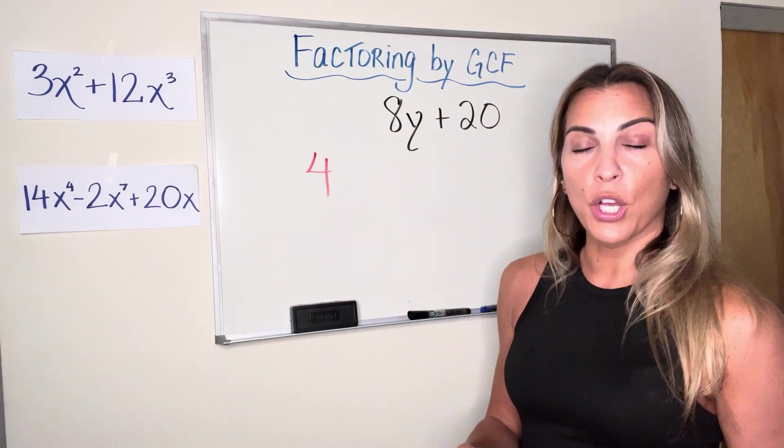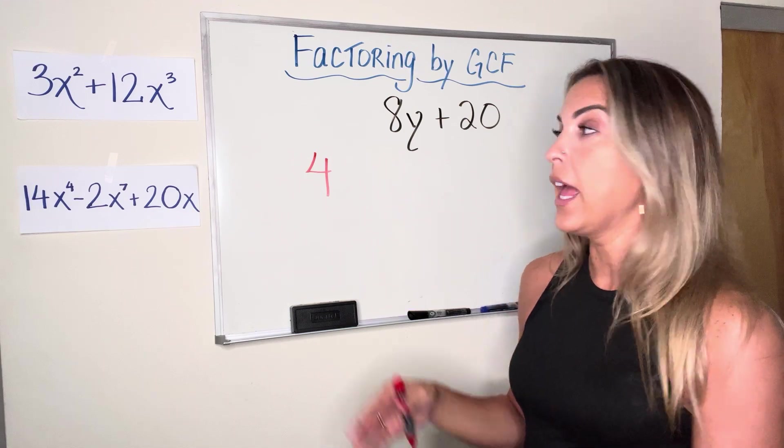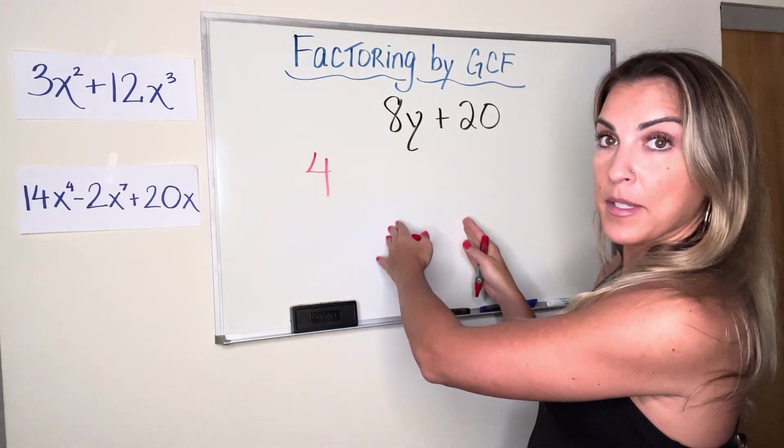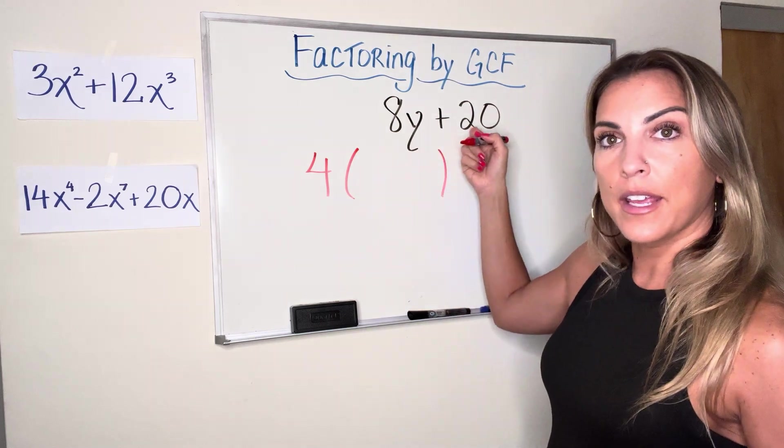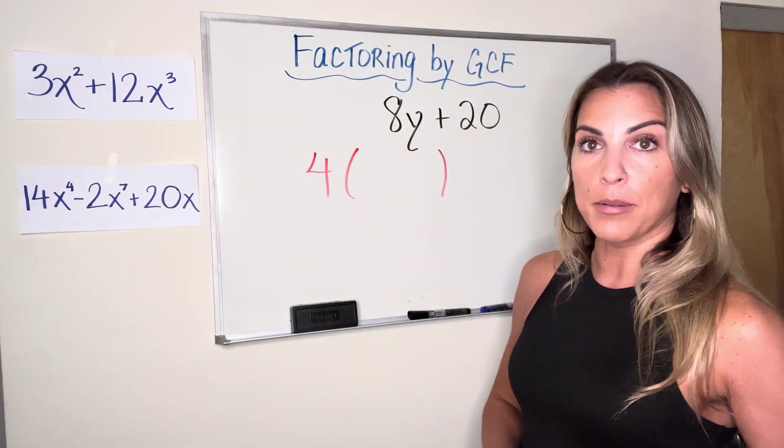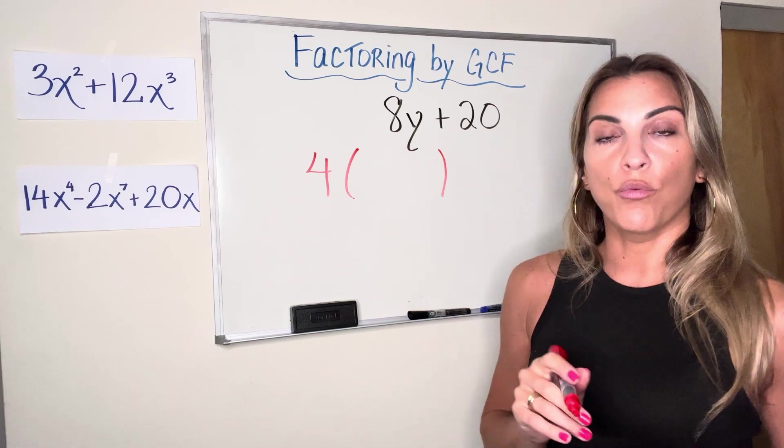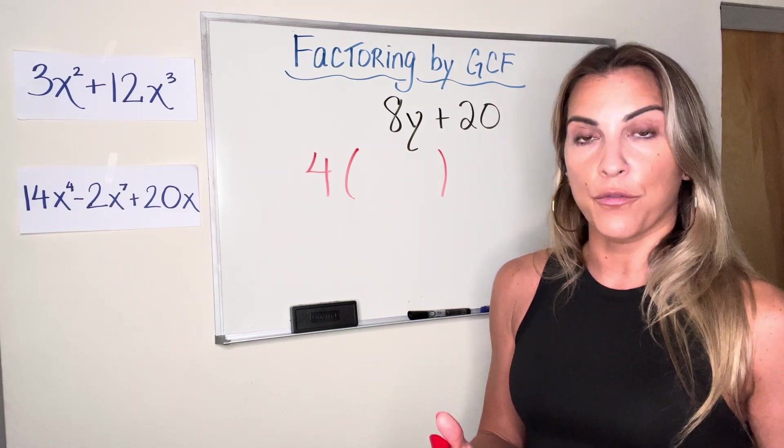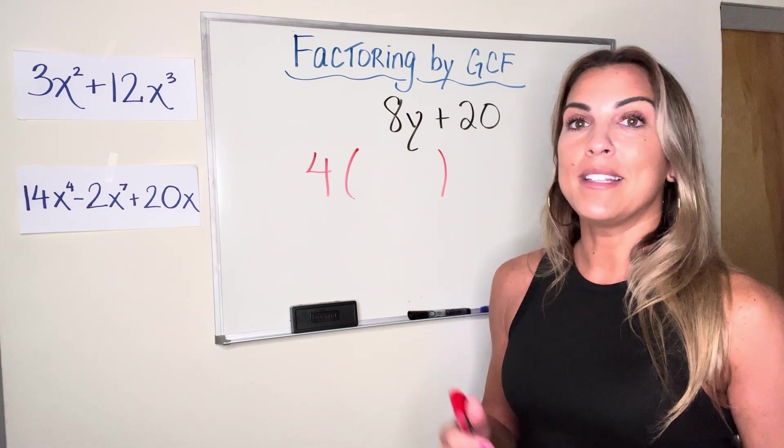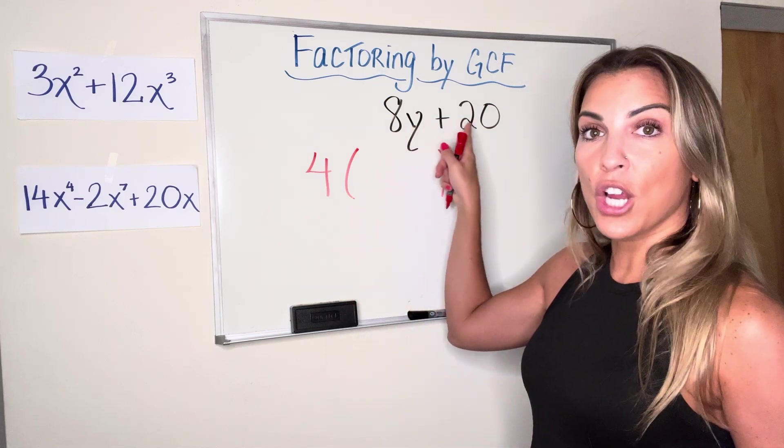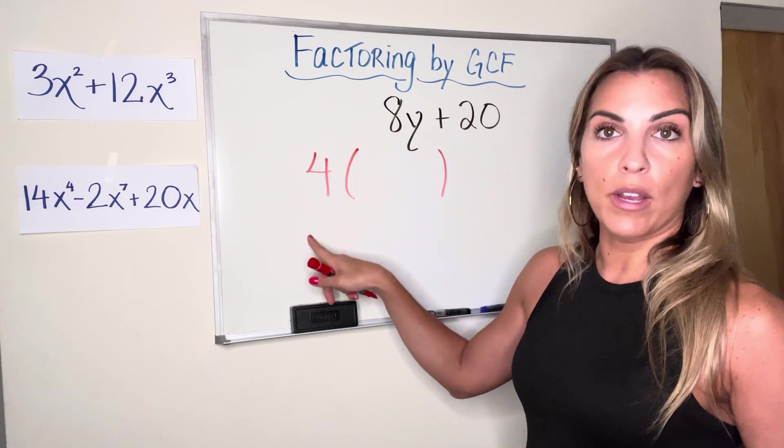So now, like I said a minute ago, factoring just means rewriting as one factor times another factor. So I'm looking to see 4 times what is going to get me my original expression of 8y plus 20. So if you're writing this down as steps, your first step is to find the greatest common factor of all the terms. The second step would be to divide each of the terms by the greatest common factor.